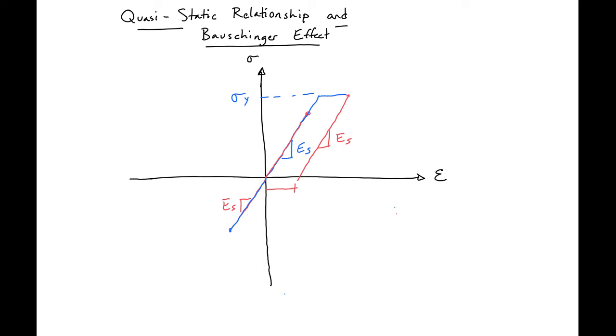If we were to keep unloading or pass over into compression then, what we'd see is we would no longer have a distinct yield point. So here we have a very distinct sharp yield point.